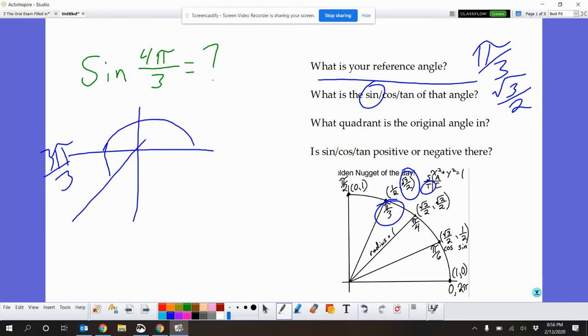In that quadrant, tangent is the only thing that's positive. So my answer for this thing is negative, because I don't want the positive tangent. I want negative sine. And the square root of 3 over 2 from that piece right there. There's sine 1. Great.